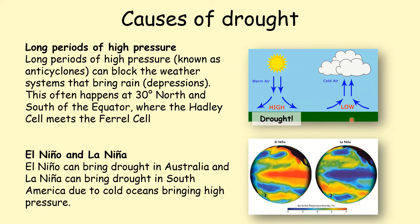Long periods of high pressure — that is, sinking air — means that clouds don't form and we don't get rainfall, so a long period of high pressure causes drought. Also El Niño and La Niña: El Niño can bring drought in Australia, and La Niña can bring drought in South America. At the end of this video you can follow the link for more information about El Niño and La Niña.